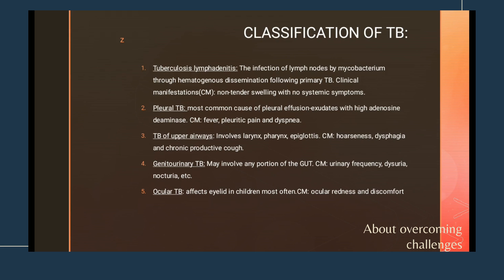The fourth clinical manifestation is genitourinary TB, where tuberculosis affects the genitourinary tract. It may involve any portion including the urinary bladder or intestine. Clinical manifestations include increased urinary frequency, dysuria, and nocturia — meaning the patient has an urge to urinate at night with increased frequency of urination.